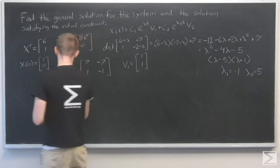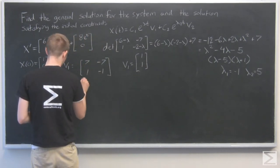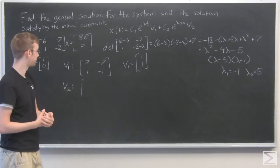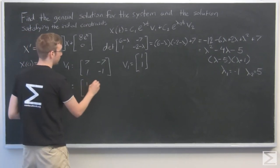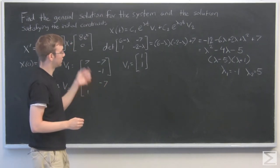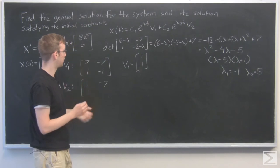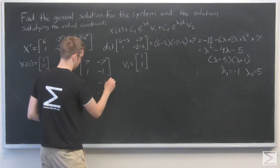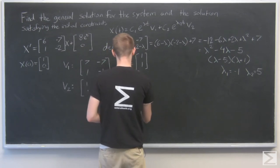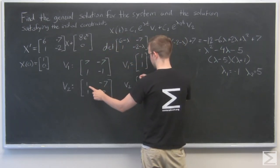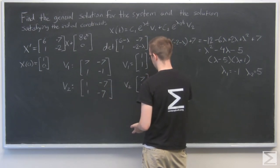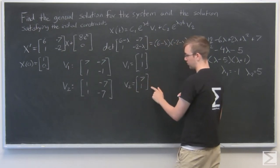And for eigenvector 2, we now use eigenvalue 5. So, 6 - 5 is 1, I have 1, 7, 1, and -2 minus 5 is -7. So my vector 2, if we multiply this one by 7, then we just have -7, and that's equal to 0. So we'll put a 1 there. So eigenvector 2 is equal to [7, 1].